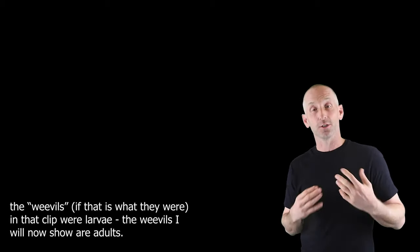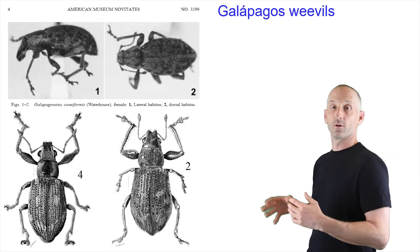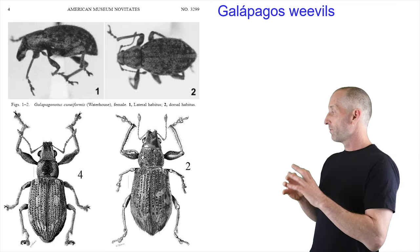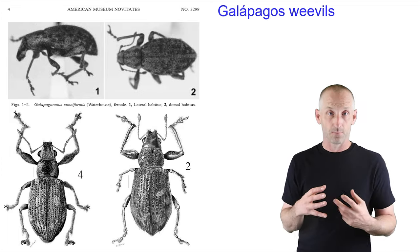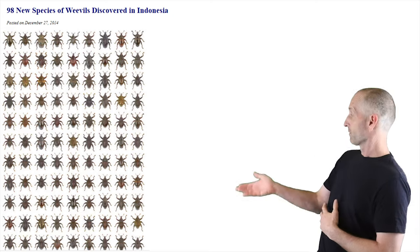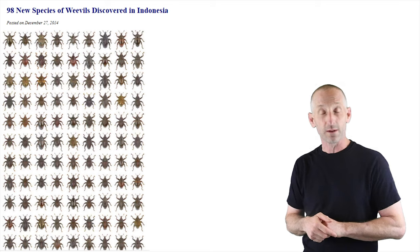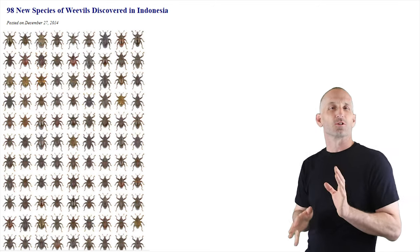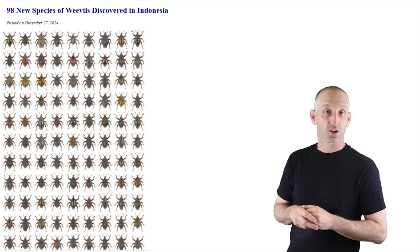That movie clip was basically making a joke about weevils and trying to link it to evolution and natural selection. And indeed there are weevils in Galapagos. Here's an image of several of the weevils that have been described in Galapagos. These weevils are part of a much larger group, and weevils are one of the most diverse groups of animals on the planet. A recent study described 98 new species of weevil in Indonesia alone. Some of these weevils are super cool — they show striking color patterns and dramatic morphological innovations.